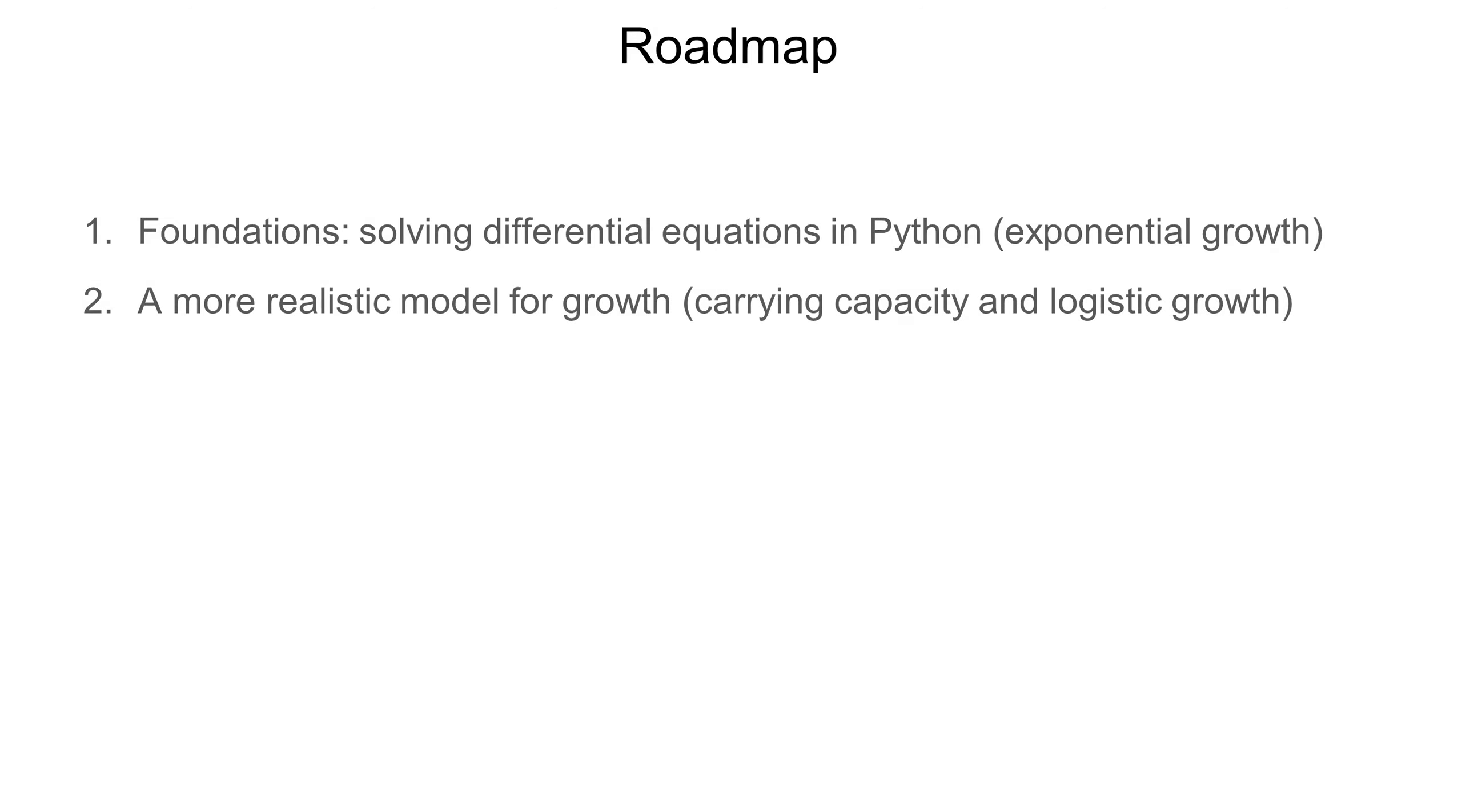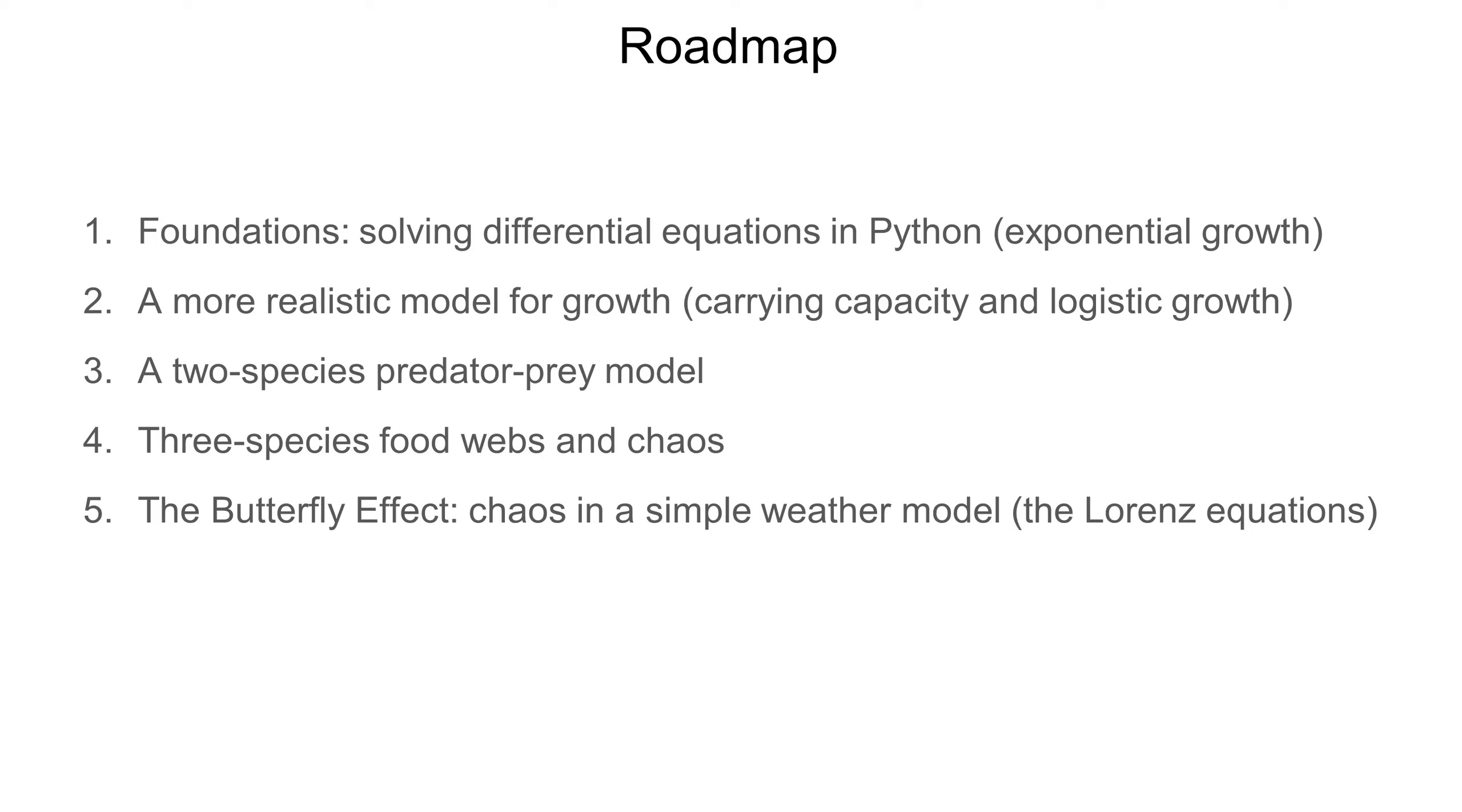We're now ready to look at chaos in greater detail. The roadmap for the rest of this video is as follows. First, we'll go over some foundations, using Python to solve differential equations, and then applying this idea to simulate exponential growth of a population of a single species. Second, we'll modify our model of growth to account for the environment's carrying capacity, resulting in a model of logistic growth for our species. Next, we'll add a second species that preys on the first species, and we'll experiment with this predator-prey model a little bit. Then things will get a lot more interesting when we add a third species to our model. We'll look at a couple different ways these three species can interact, and at the chaos that can result. All of the examples so far will be drawn from mathematical ecology, but no discussion of chaos is complete without mentioning the butterfly effect, so we'll do just that in our final example, which will be a simple weather model.